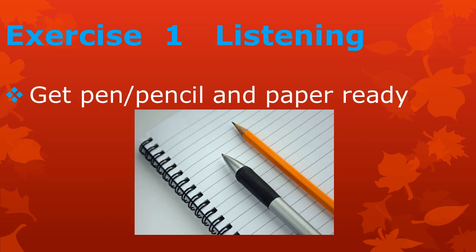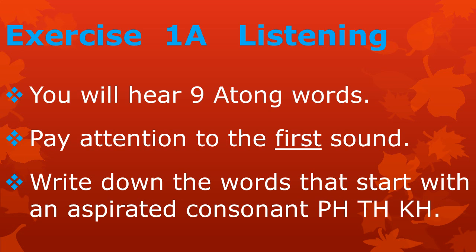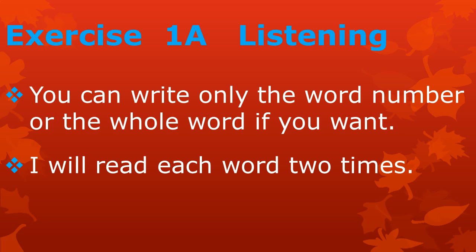Exercise 1: Listening. For this exercise, it is best to have a pen or pencil and a piece of paper to write on. If you do not have these ready now, pause this video and get them. You will hear 9 Atong words. Pay attention to the first sound of each word. I want you to write down which word starts with an aspirated consonant — ph, th, or kh. You can just write the number of each word, or write the whole word. I will read each word two times. Ready? Here we go.